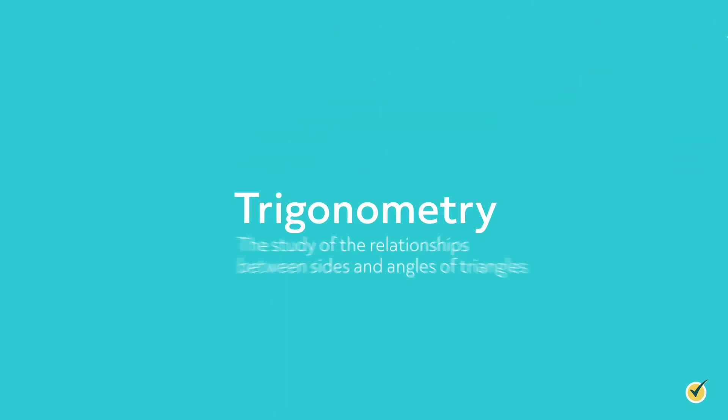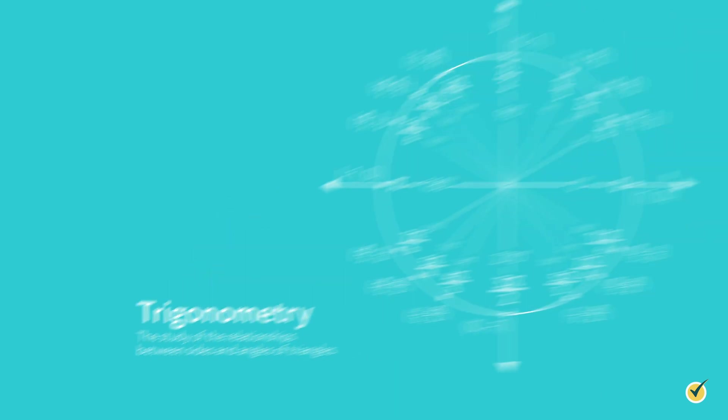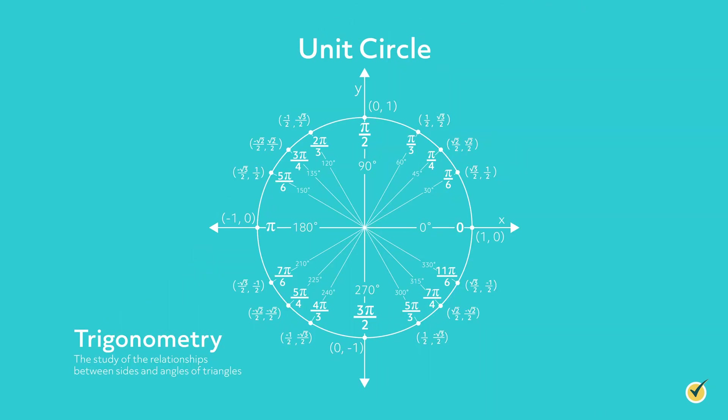Trigonometry is the study of how a triangle's sides and angles relate to one another. Now you're probably wondering what circles and triangles have to do with one another. And that's a great question. One of the most common uses of trigonometry is in finding the measures of an angle given two sides of a right triangle.